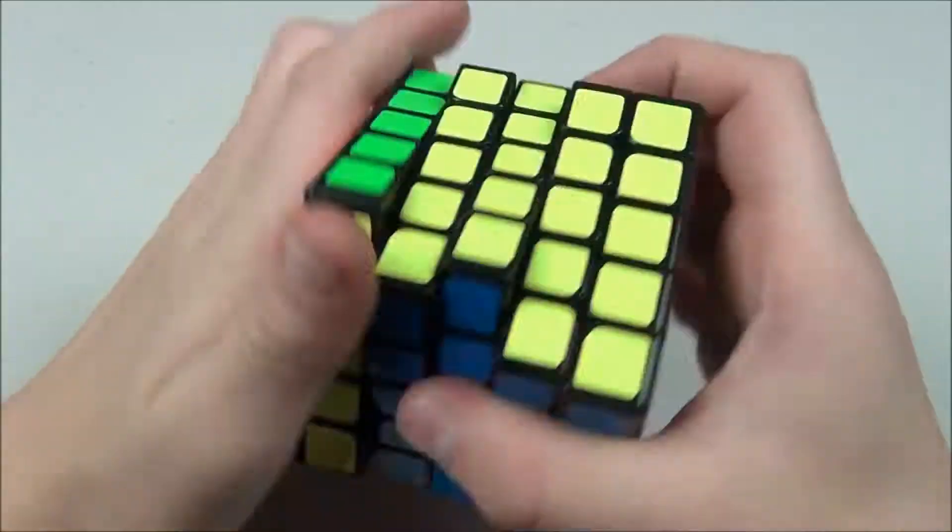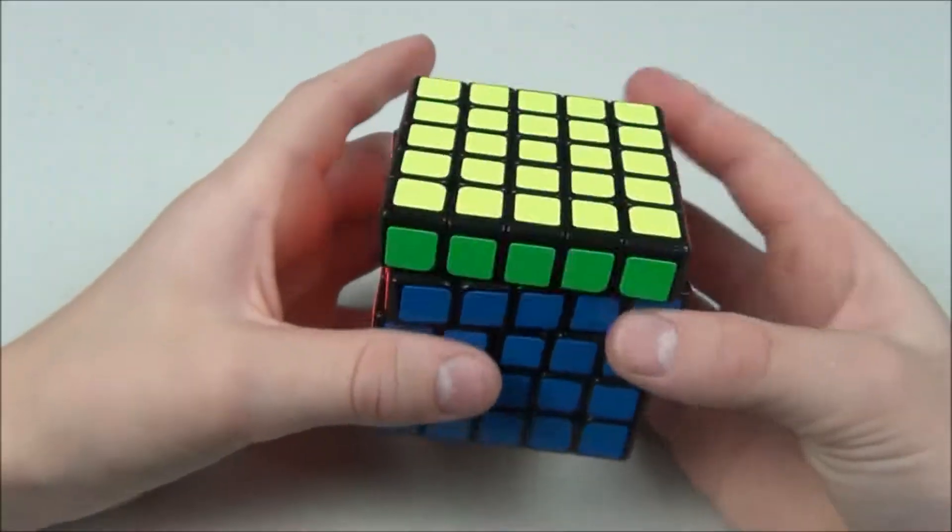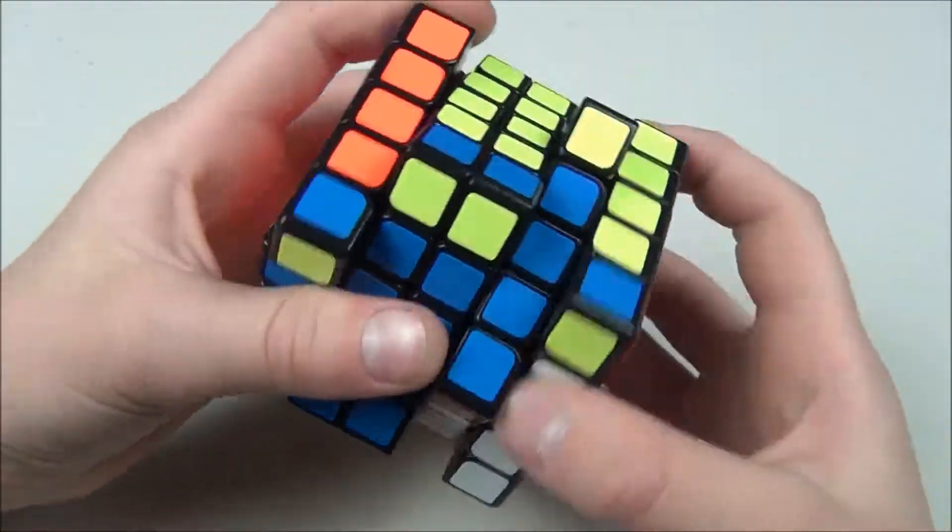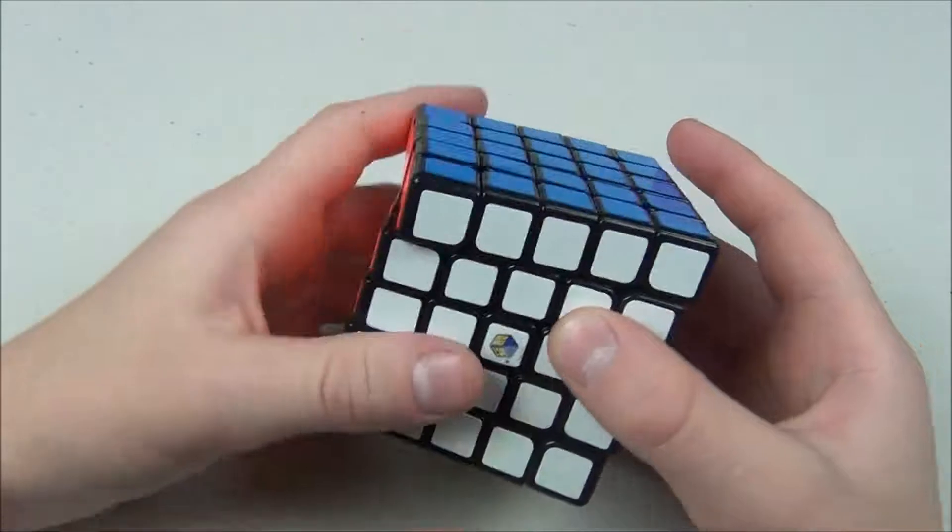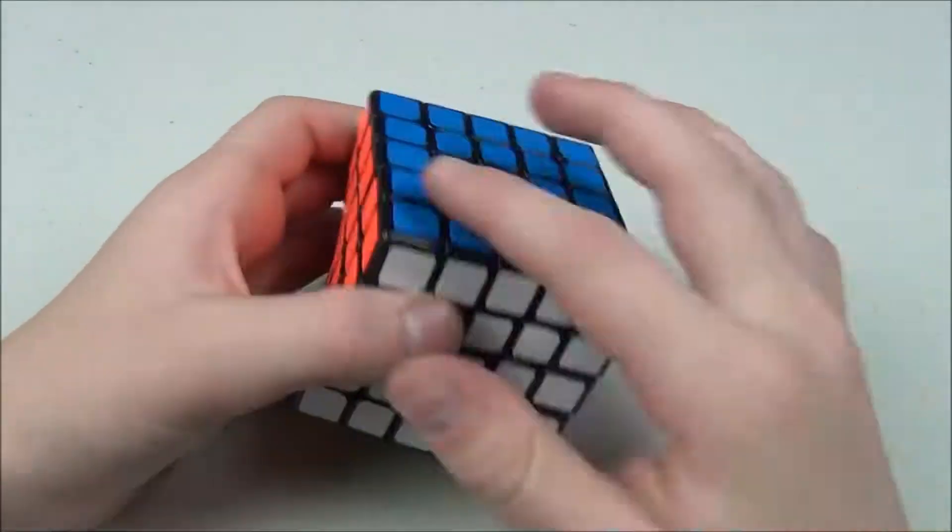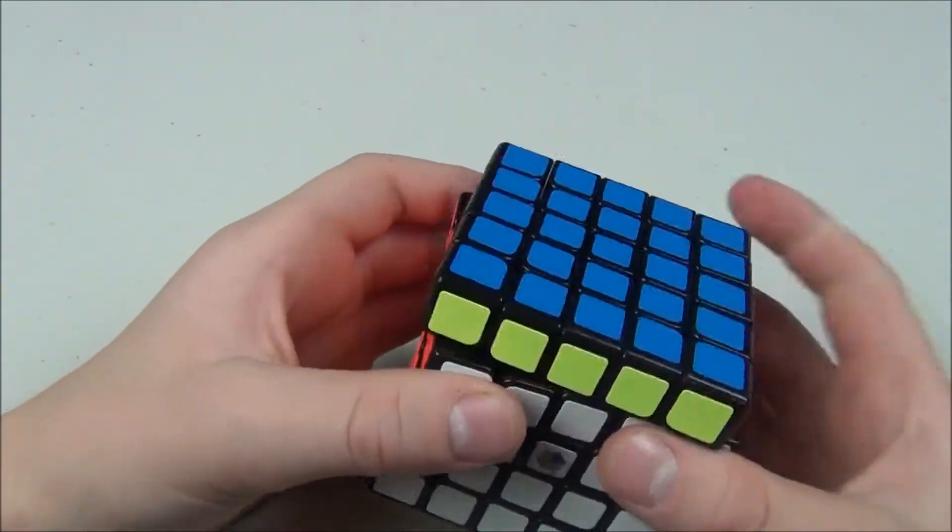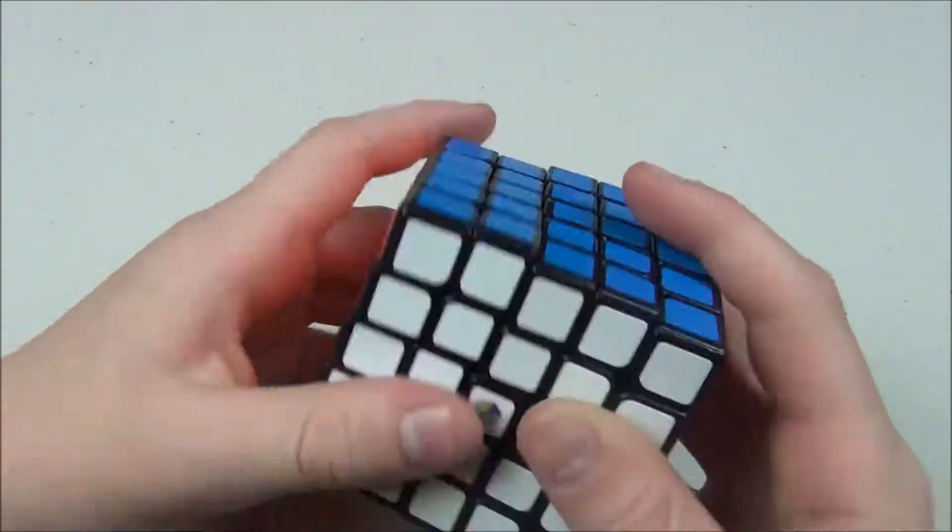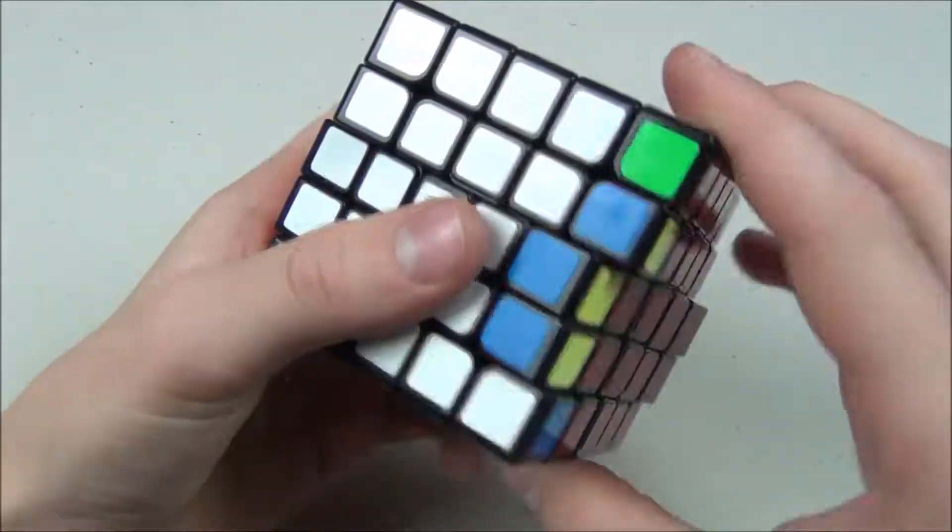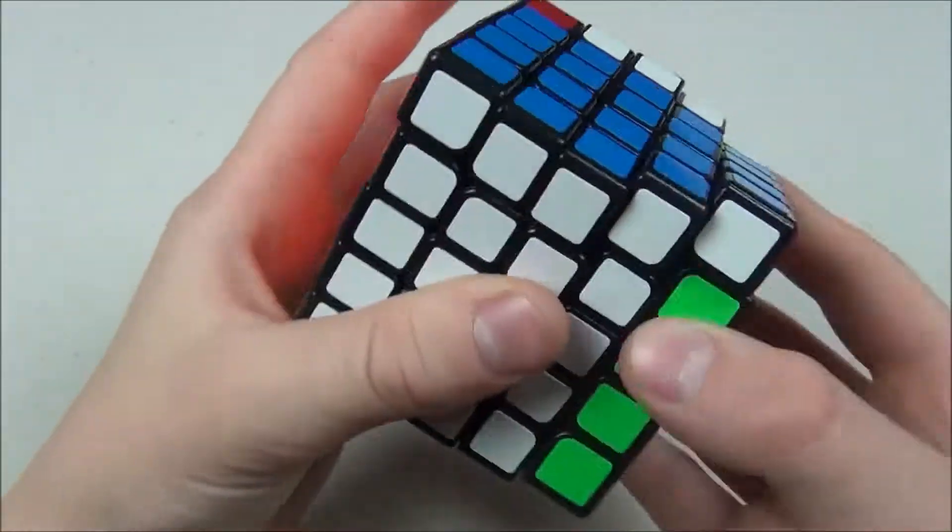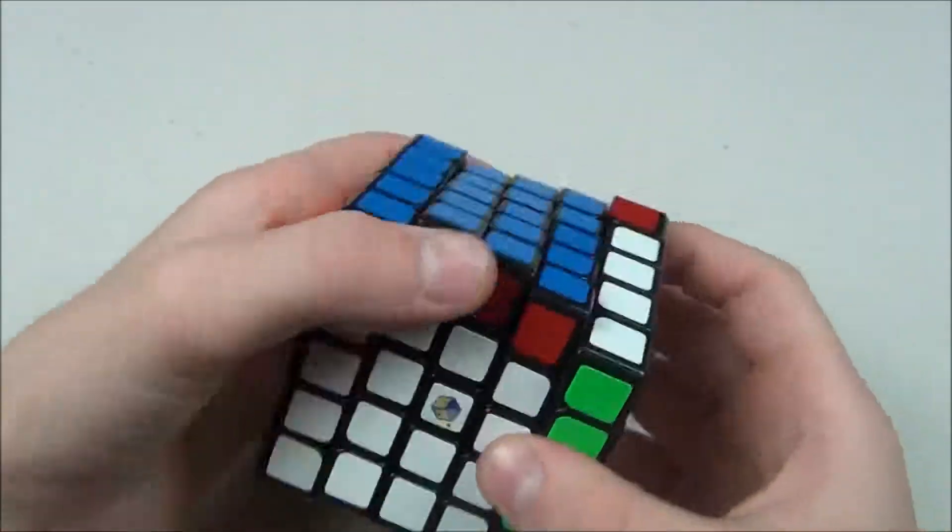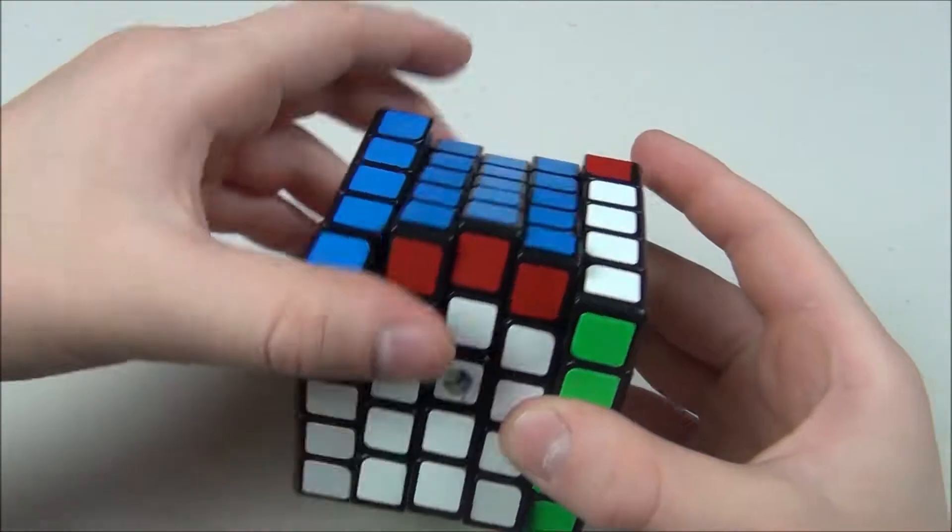But when I'm trying to turn quickly and efficiently, it's just not happening. Everything wants to move. All of these other layers, especially these inside ones, but even other layers like the U layer and the L layer. If I even just try to do a sexy move here, it's like ridiculous. If I'm not holding it like this and doing it on an angle, I don't feel like I can do it quickly at all.